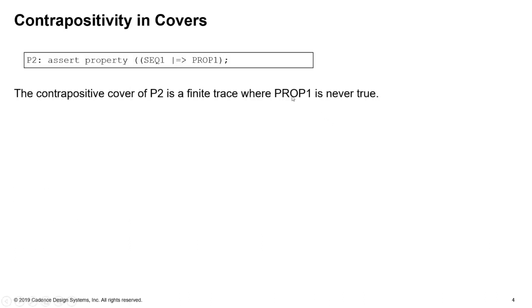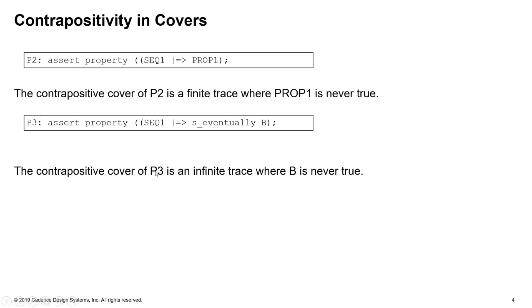Well, it's useful in covers, in formal. So if we have an assert like that, the contrapositive cover of this assertion P2 is a finite trace where PROP1 is never true. And if we have a liveness property, so if we say, if I have sequence 1, then eventually I observe B. The contrapositive cover of that is an infinite trace where B is never true. And why is that useful?